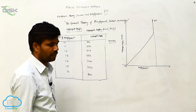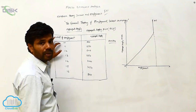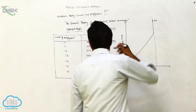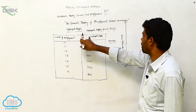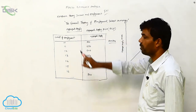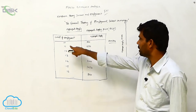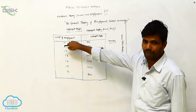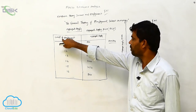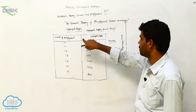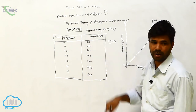You can observe here: at the level of employment 10, the aggregate supply is 500. So what will happen at this stage — when you are applying the level of employment 10, the aggregate supply is also 500.